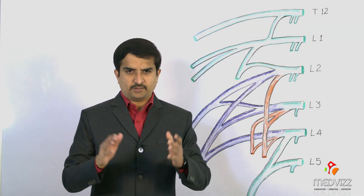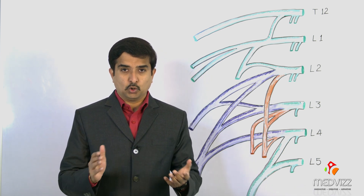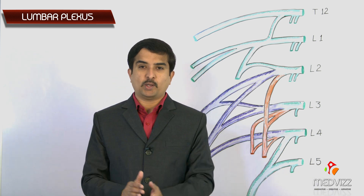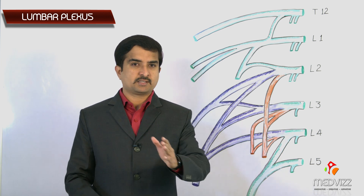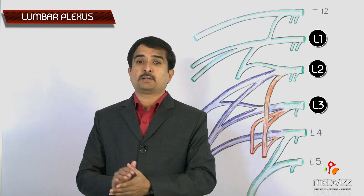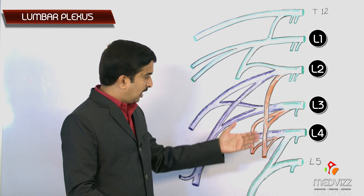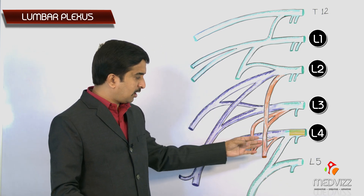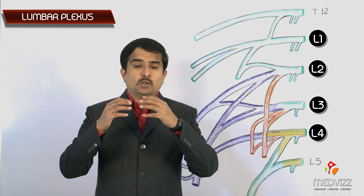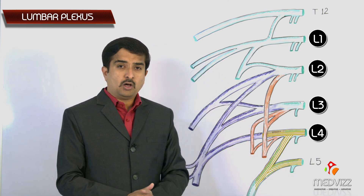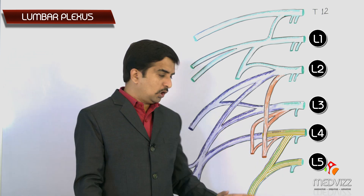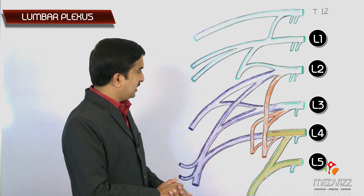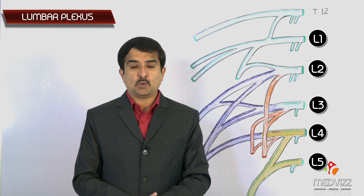We are going to discuss one very important topic of the gross anatomy of the lower limb, which is the lumbar plexus. As you can see in this picture, the lumbar plexus is formed within the psoas major muscle by the union of the ventral ramus of L1 to L3 and also the larger upper part of the ventral ramus of L4. The lower smaller part of L4 joins with the ventral ramus of L5 to form the lumbosacral trunk, which takes part in the formation of the sacral plexus.